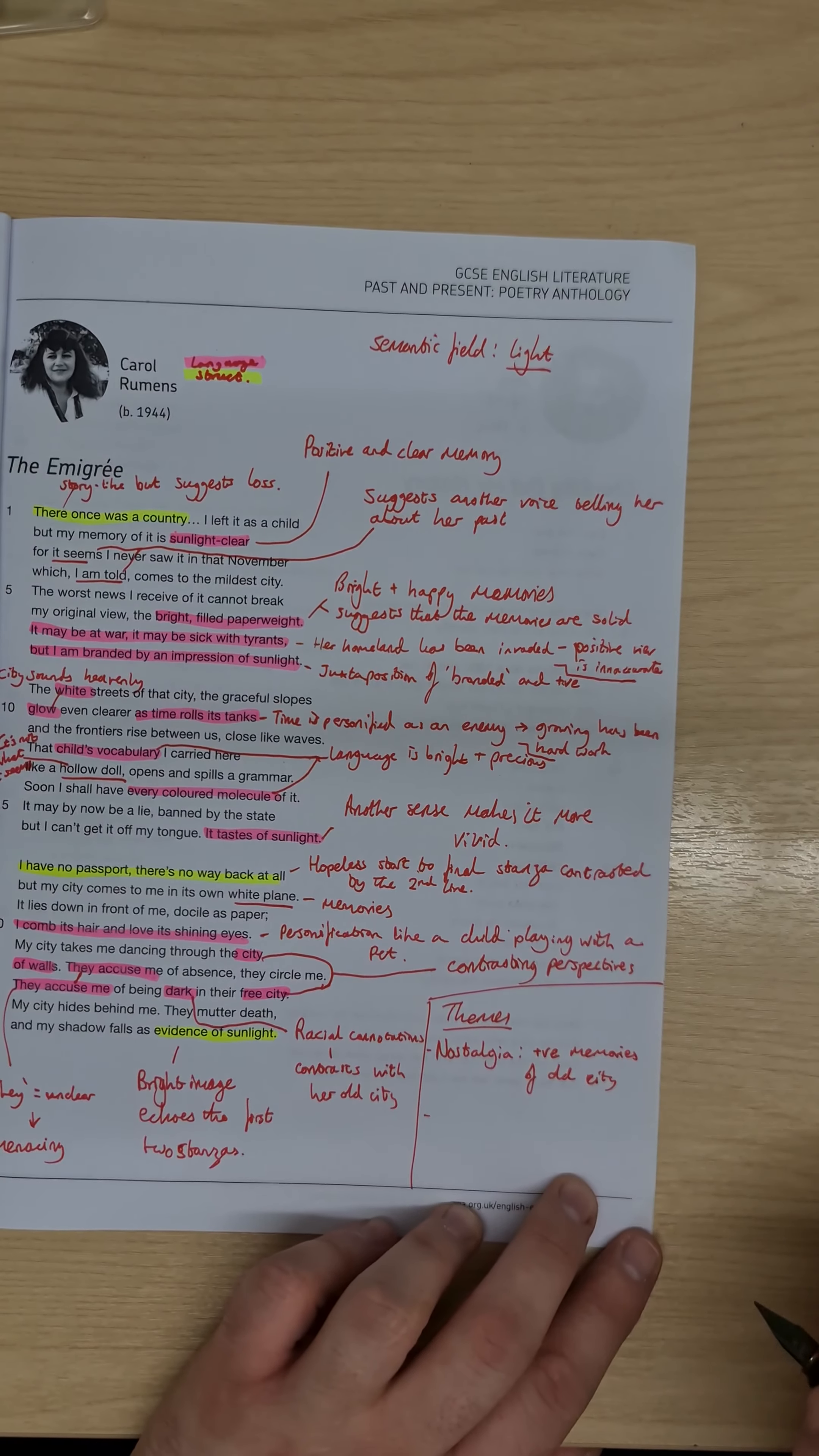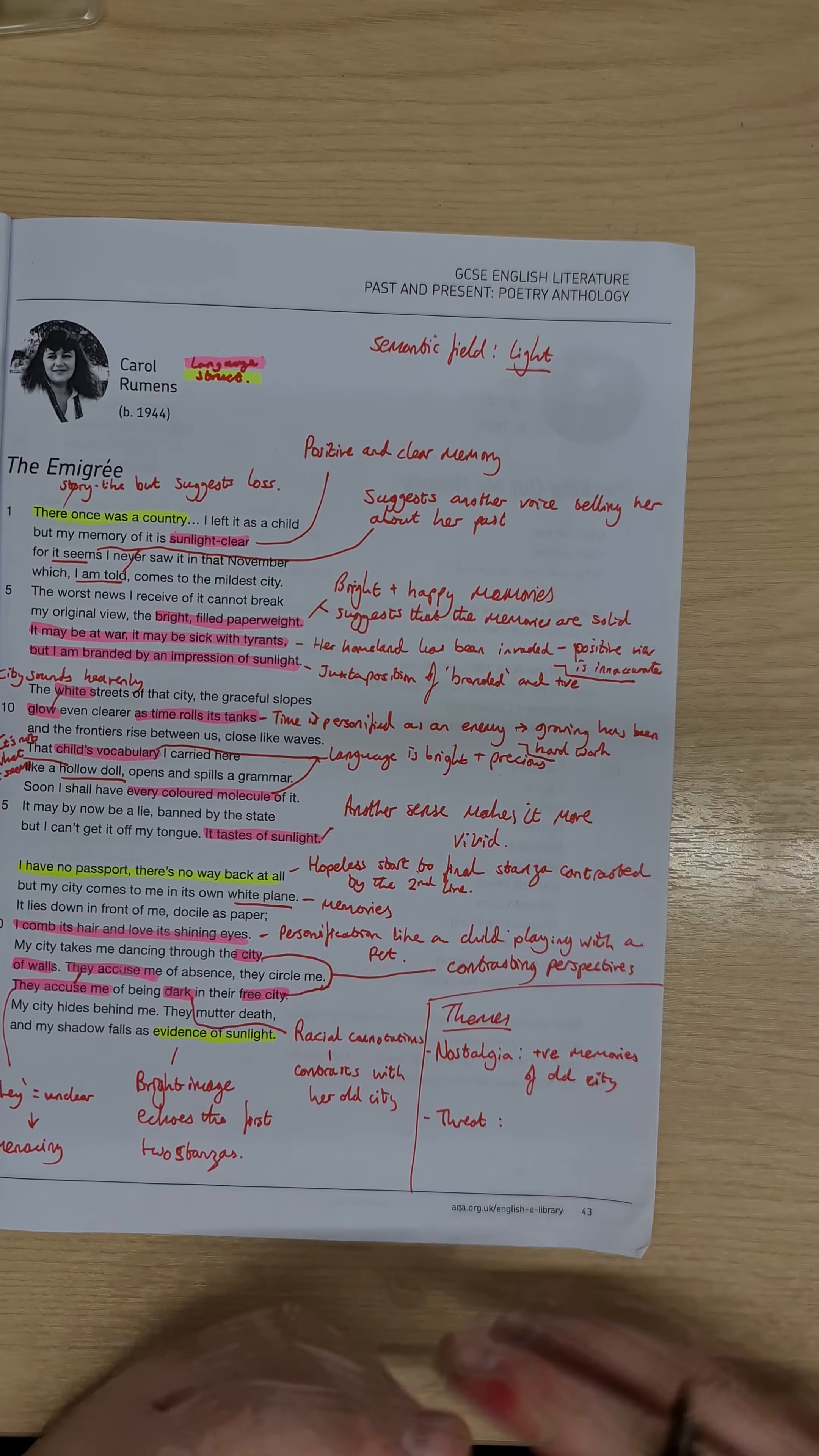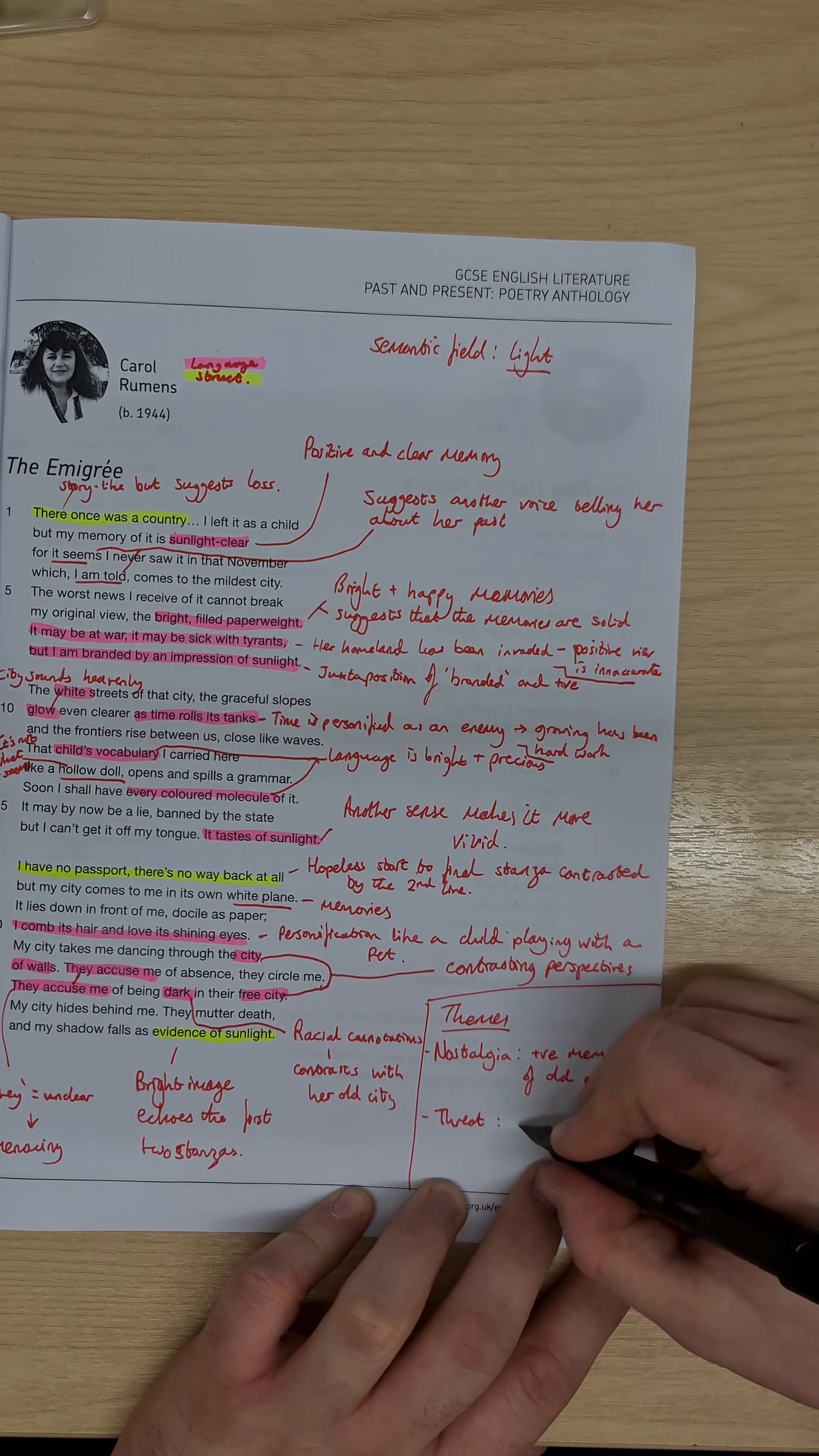and then we follow up the nostalgia with threat, and there are suggestions that the city that she lived in were almost, it was invaded or taken over by a tyrant, but the speaker chooses to ignore the threat to focus on the positive,